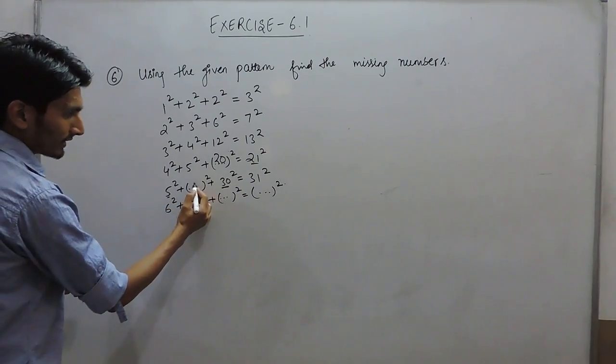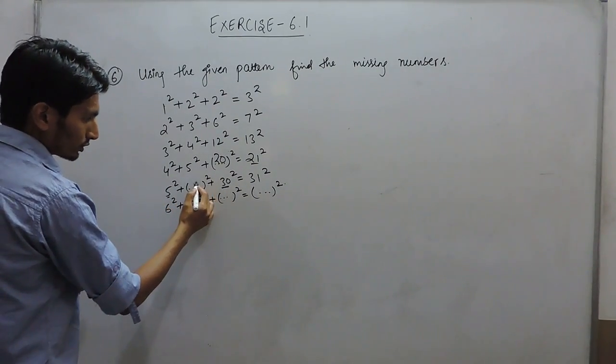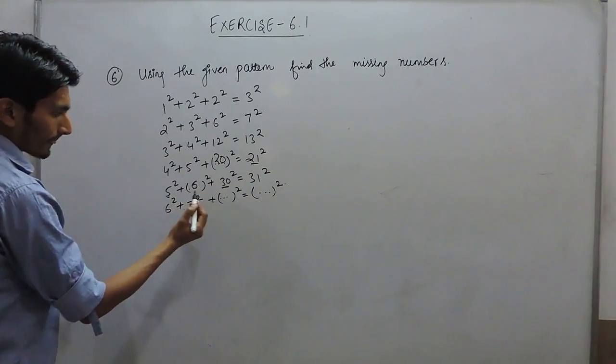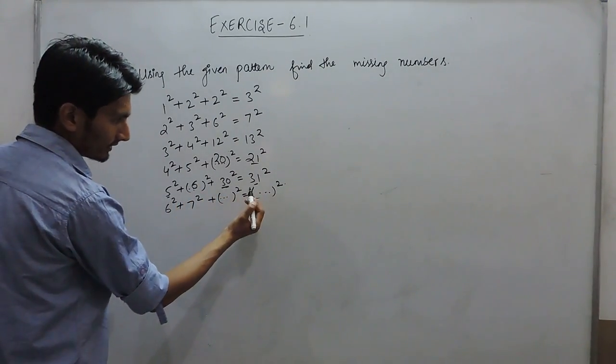So 5 into something is 30. So this must be 6. 5 times 6 is 30, and plus 1.